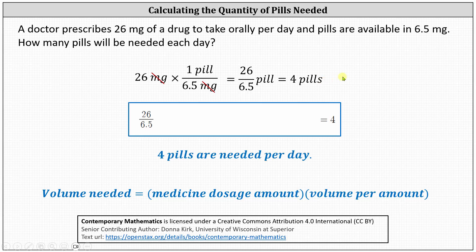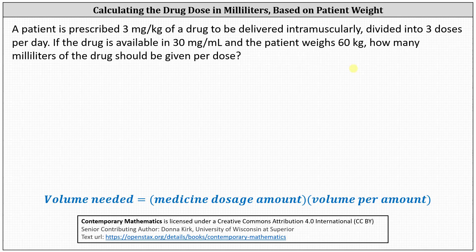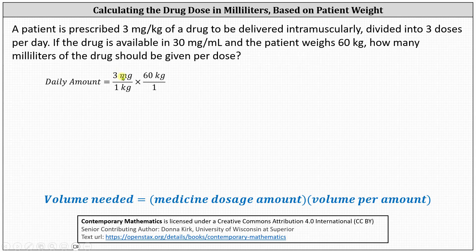The patient needs to take 4 pills per day. Let's take a look at one more example. A patient is prescribed 3 milligrams per kilogram of a drug to be delivered intramuscularly, divided into 3 doses per day. If the drug is available in 30 milligrams per milliliter and the patient weighs 60 kilograms, how many milliliters of the drug should be given per dose? First, let's determine the total amount of medicine the patient needs per day: 3 milligrams per kilogram times 60 kilograms — kilograms simplify out — giving us 180 milligrams per day.